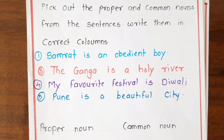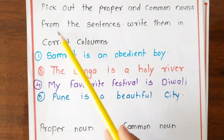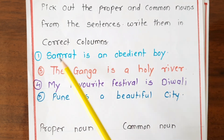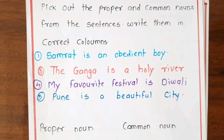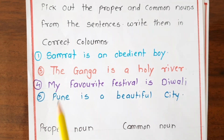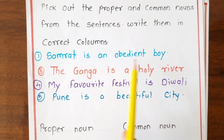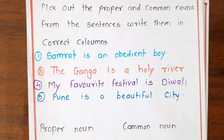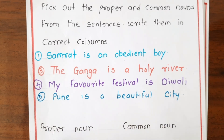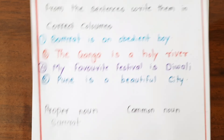Next, pick out the proper nouns and common nouns from the sentences and write them in the correct columns. First sentence: 'Samrat is an obedient boy.' Samrat is a particular name, so 'Samrat' is the proper noun.